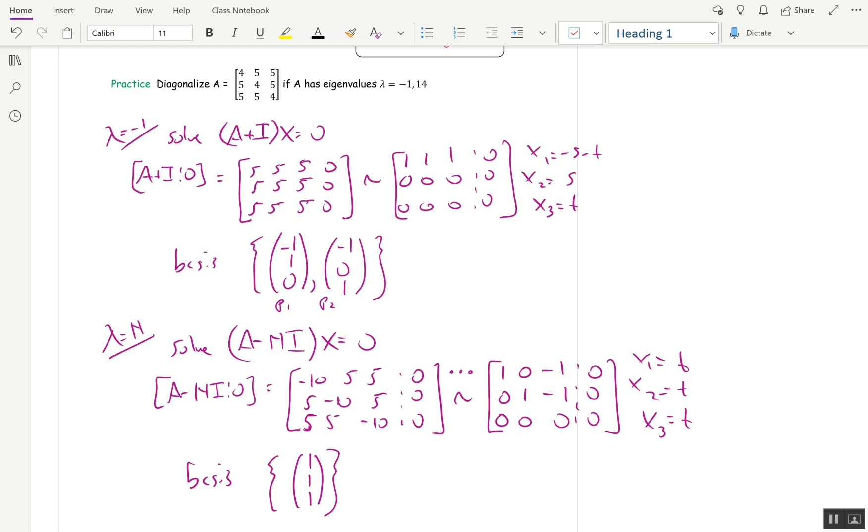You might want to pause the video at this point and look at my solution and make sure yours matches mine. For lambda equals negative 1, for my basis, I found negative 1, 1, 0 for P1, and P2 was negative 1, 0, 1. Now you could switch the order here and call them different names and that wouldn't matter.